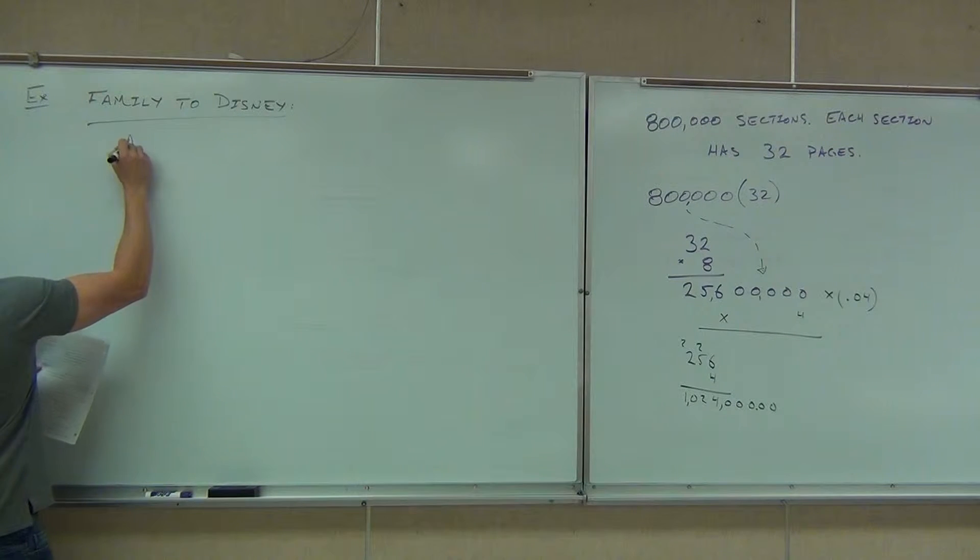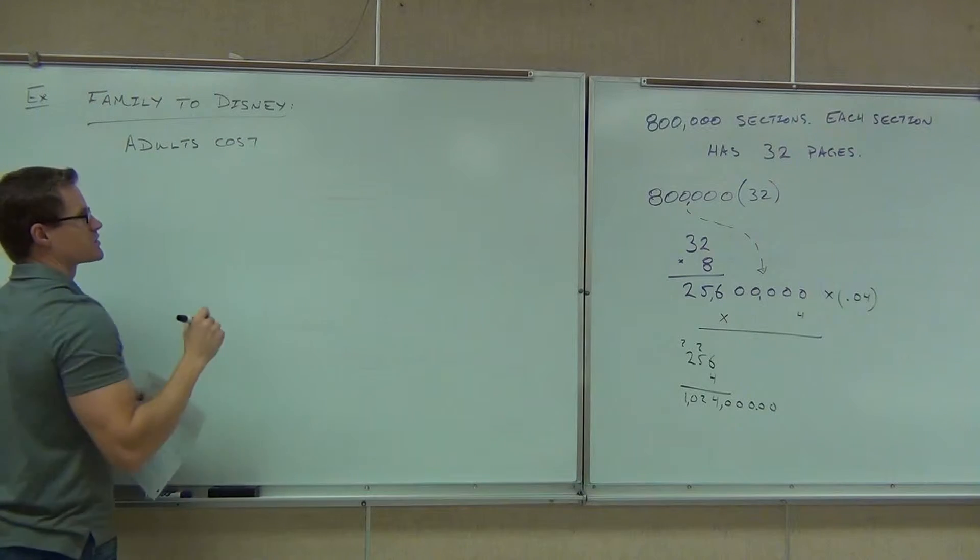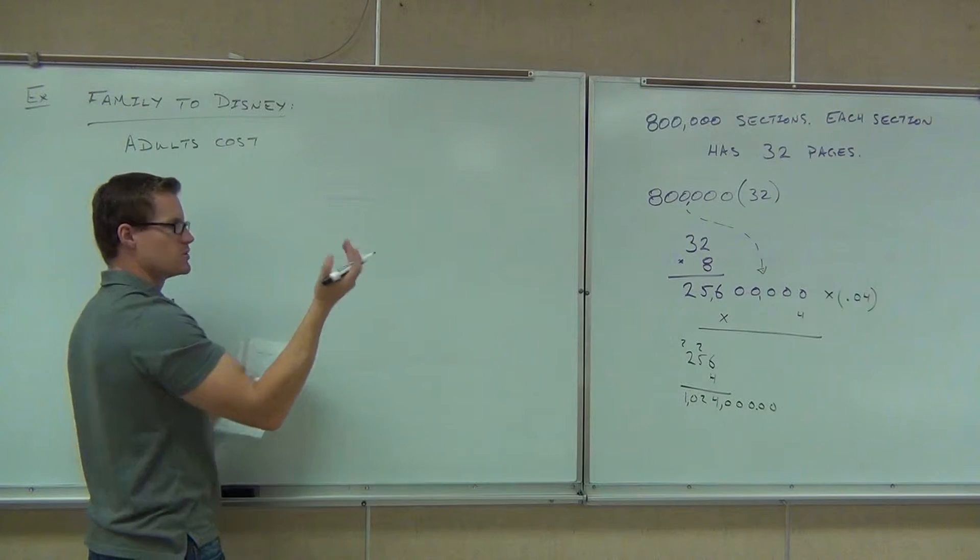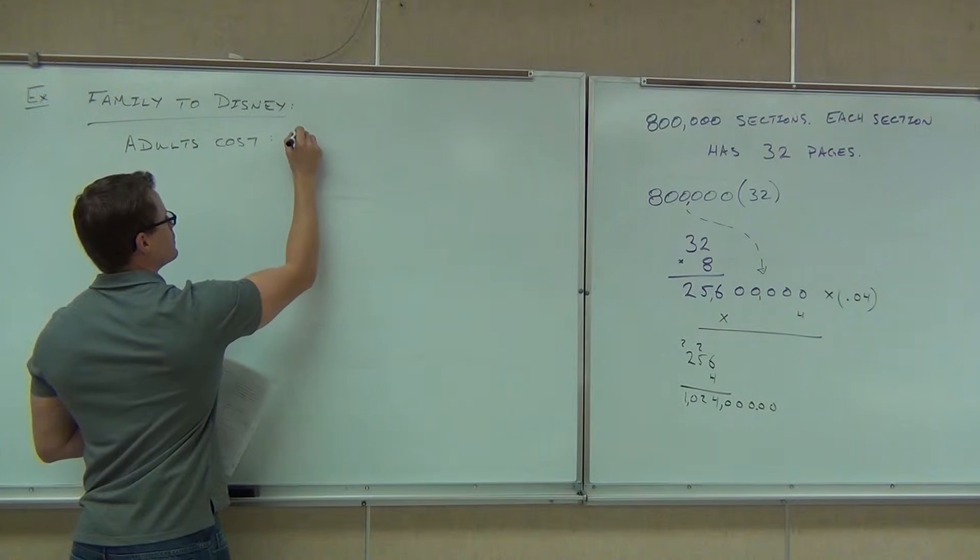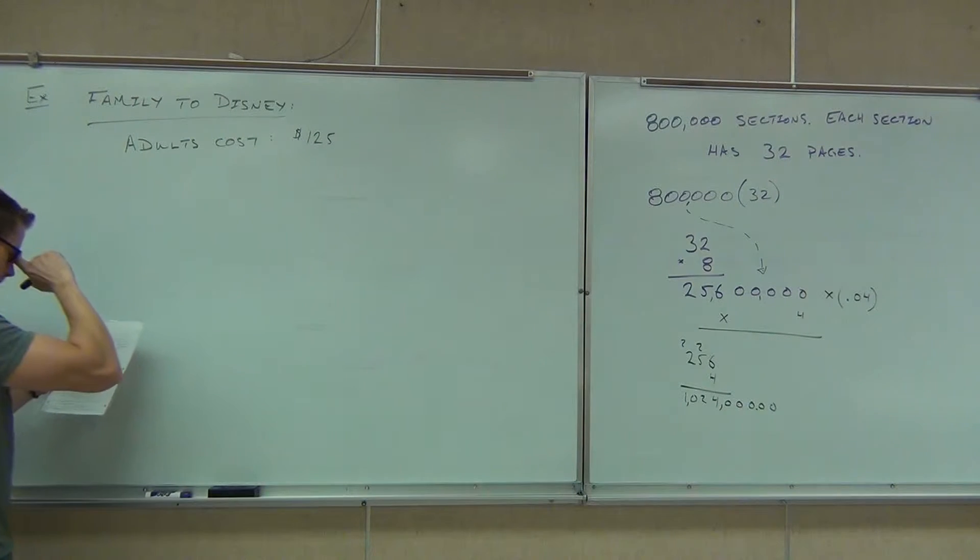We said that adults cost, we'll make it up, we'll say $125 for a two-day park-hopper ticket. And kids cost, we'll make it $105.